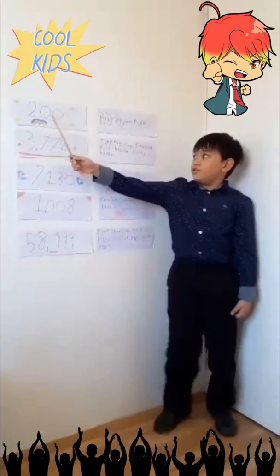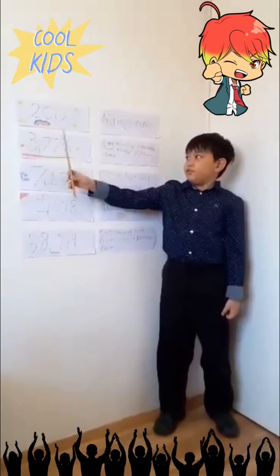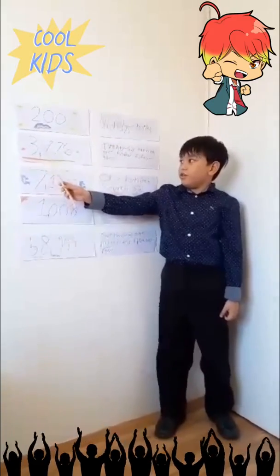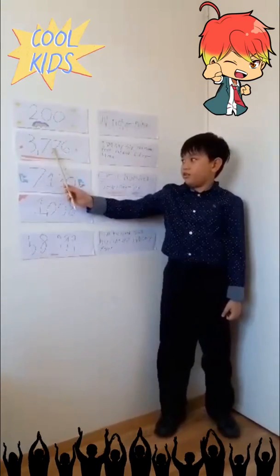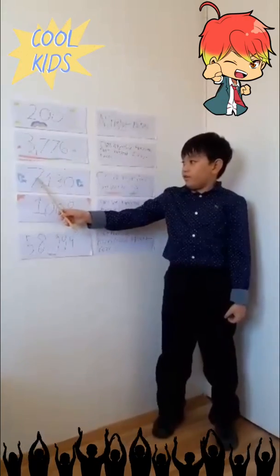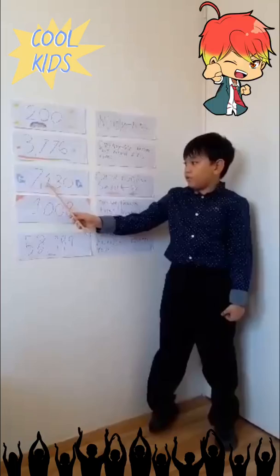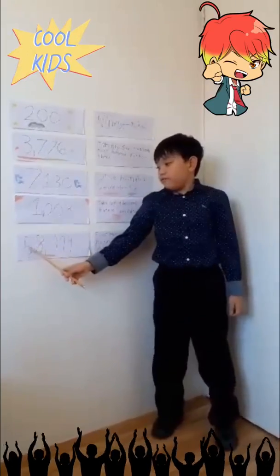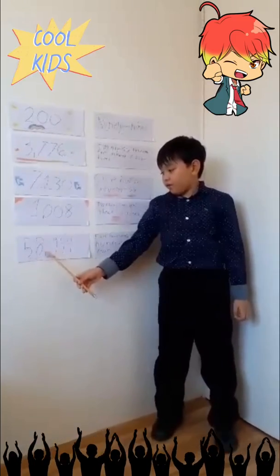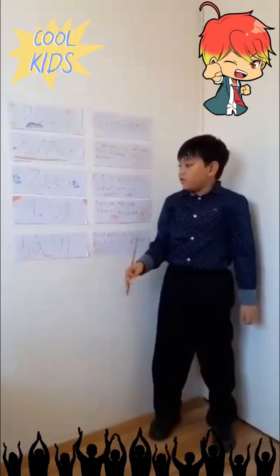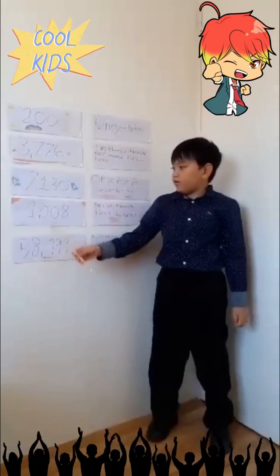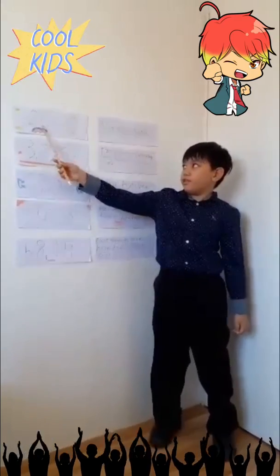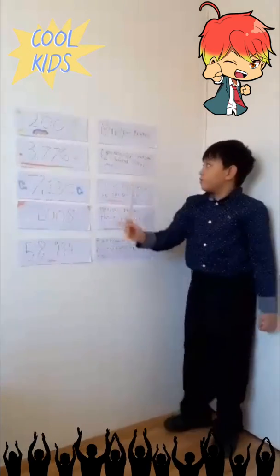So 200 — this is how you write 200. And then 3,776, there's a comma separating the thousands and hundreds. And then 7,130, and then 1,008, 58,999. There's a comma in all of these thousands, except you don't have to put a comma on hundreds separating the hundreds and ones.